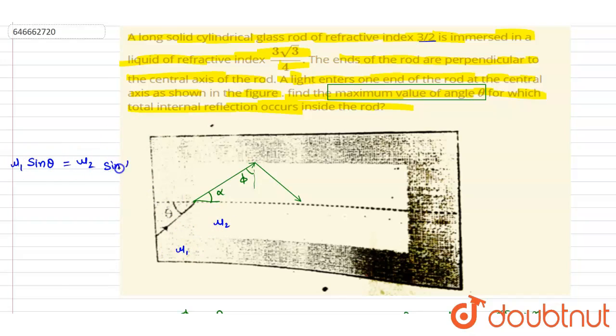So μ₁, it is, if you see, the liquid, it is 3√3/4 sin θ. μ₂ is, if you see, it is 3/2.